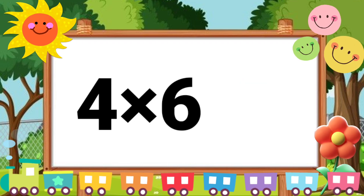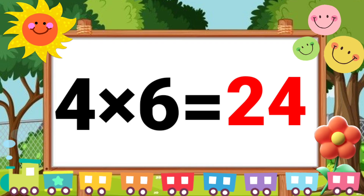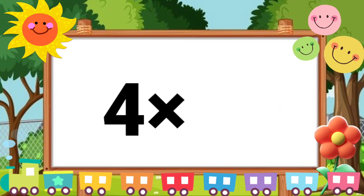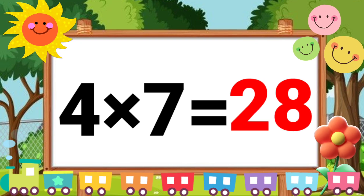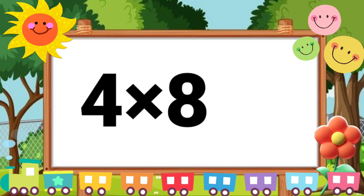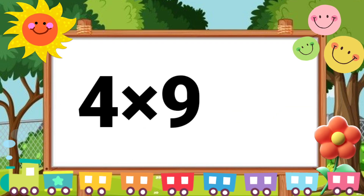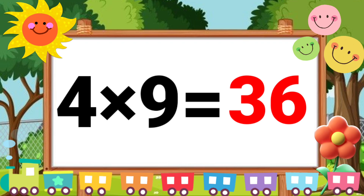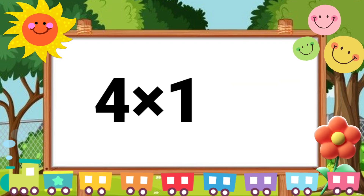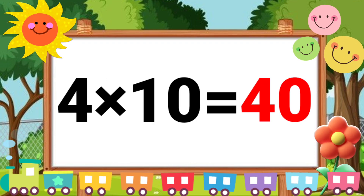Four fives are twenty. Four sixes are twenty-four. Four sevens are twenty-eight. Four eights are thirty-two. Four nines are thirty-six. Four tens are forty.